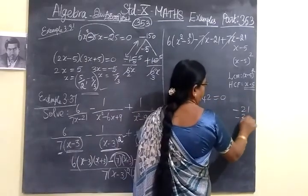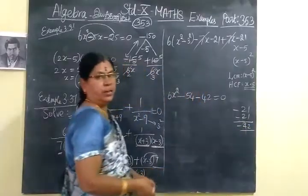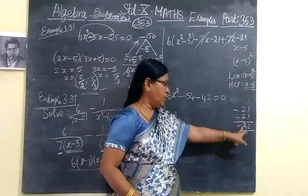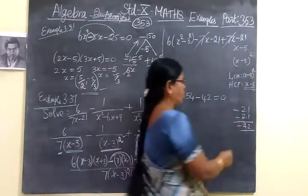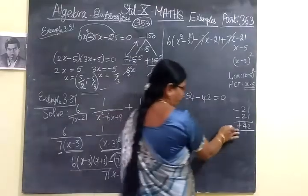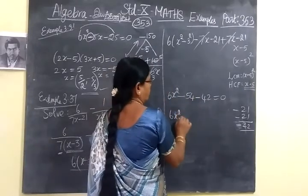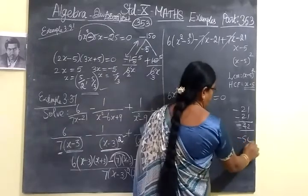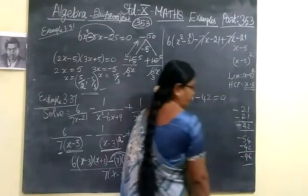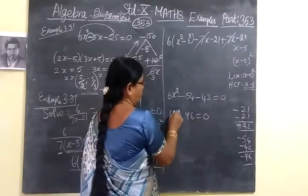Both are minus means add and put greater number sign. Students are committing mistake here only. Both are minus. Minus into minus is plus only in multiplication. Now we are adding, so this is minus only. 6x². Both are minus means it is actually added. So -96 = 0. 6x² is common.